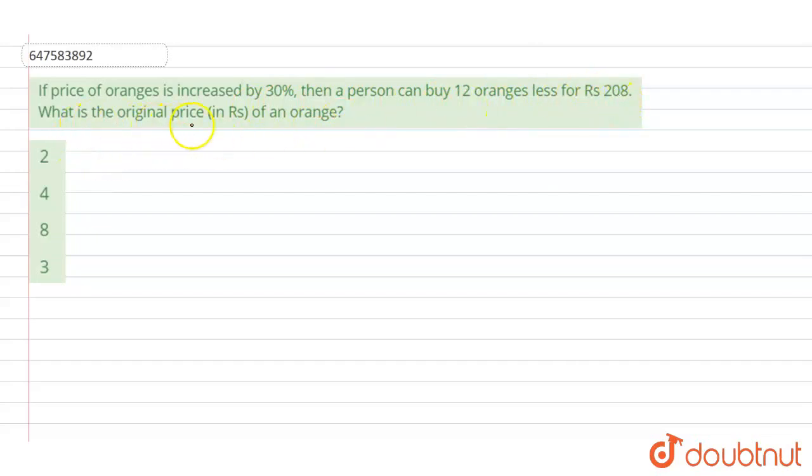We have to find the original price of the oranges in rupees. So let the price of one orange be X rupees. Now, oranges bought for rupees 208 is equal to 208 by X.